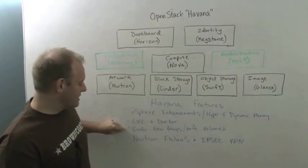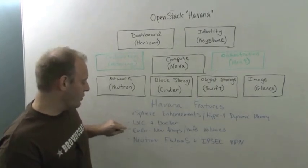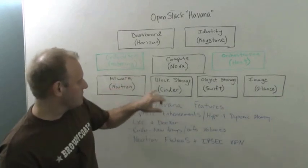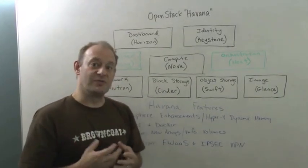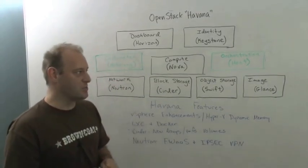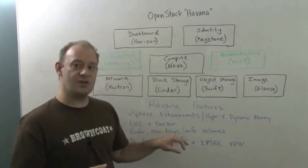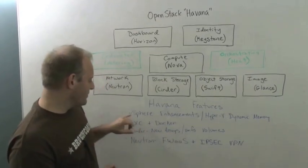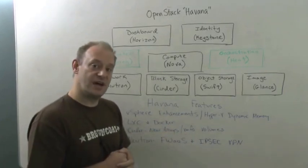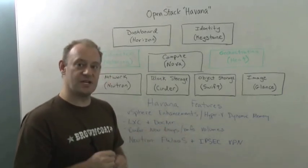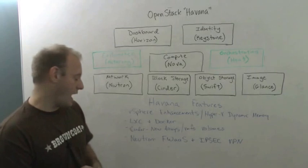And second to last is Cinder. In Cinder — the block storage — you have a lot of new arrays. 3PAR is bringing in some, NetApp is bringing in some. And then also, as part of the vSphere enhancements, you have VMFS as well. So you can actually do VMFS volumes through Cinder with Havana.